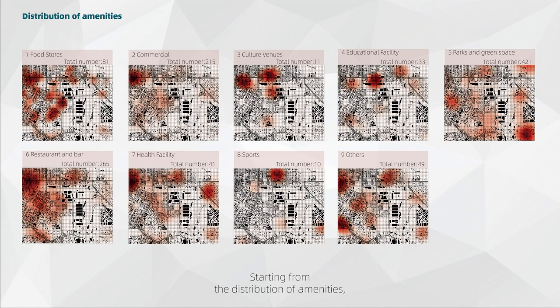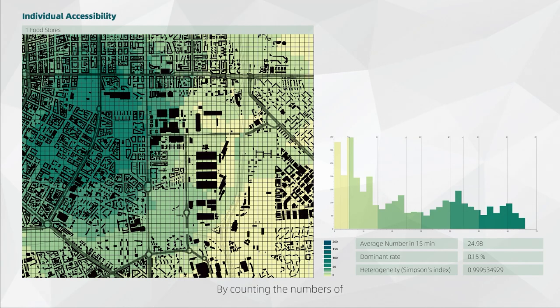Starting from the distribution of amenities, we can find the parks and green spaces are homogeneously spread, but restaurants and other services are much closer to the city center on the left. By counting the numbers of accessible services for each grid by categories, we've got the individual accessibility. This is the preparation for the later diversity analysis. Because diversity, according to its definition, is a property about the richness of different values.